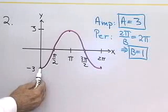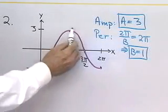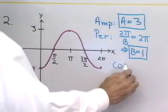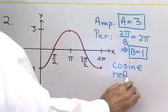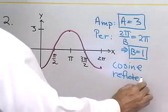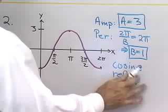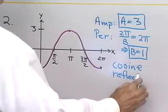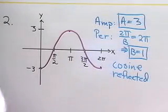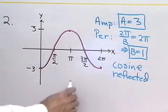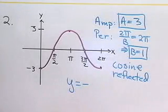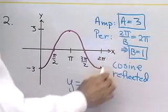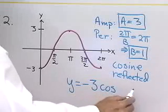Now, there's no phase shift. It starts right here. I'm going to say that this looks like a cosine curve that's been reflected. So, the graph is a cosine curve that's been reflected, so it's going to be y equals, I'll put a negative sign in that will reflect it, amplitude is 3, cosine of...